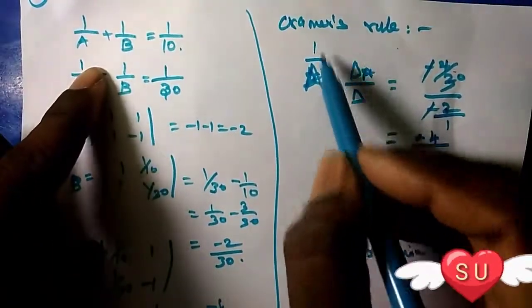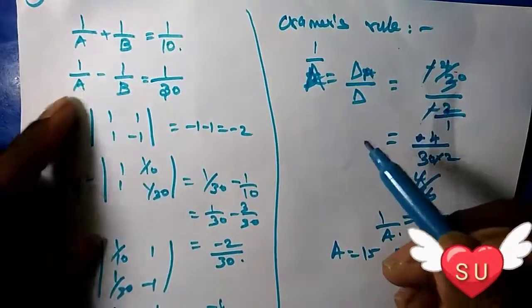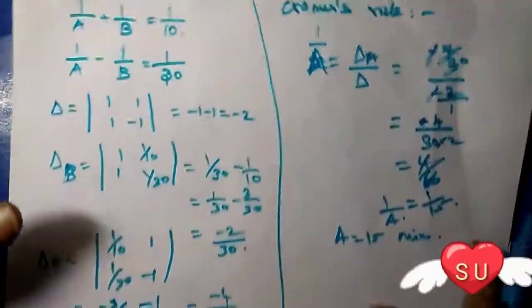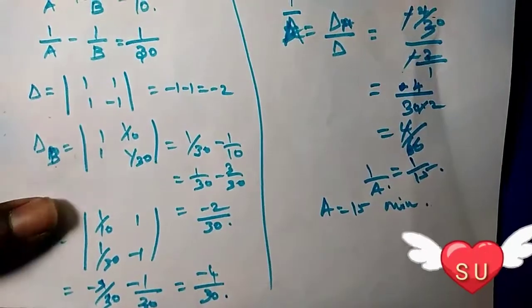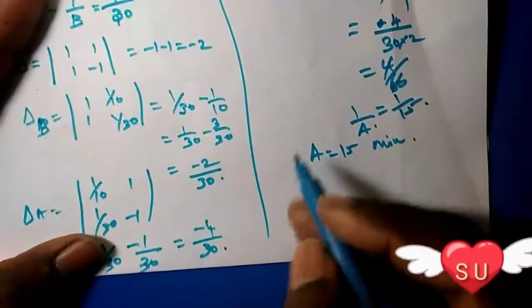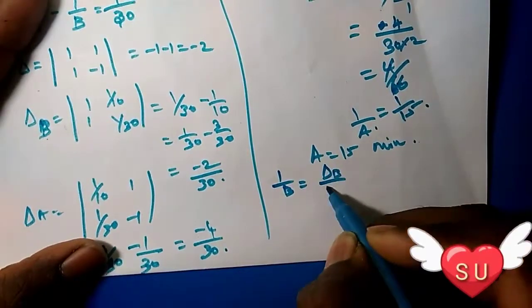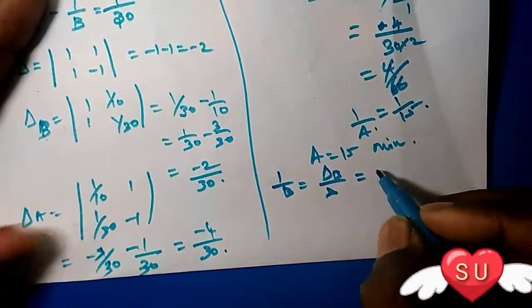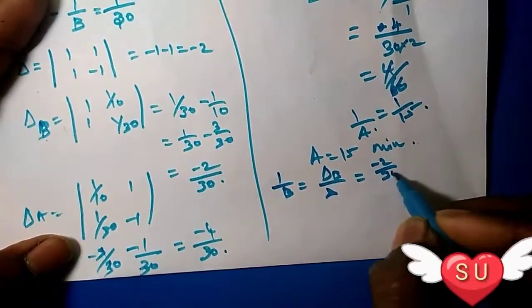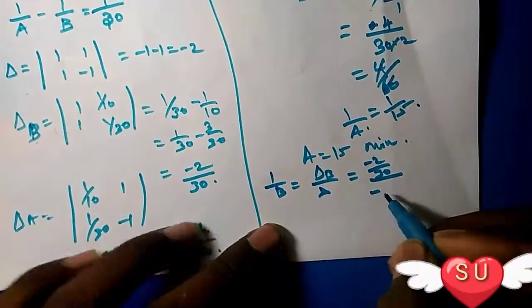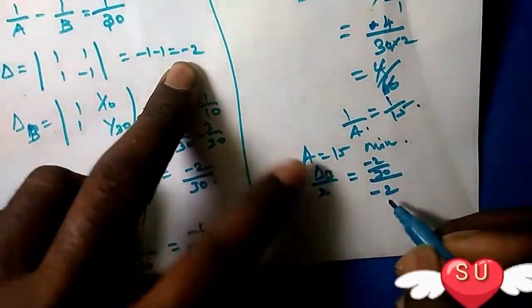Next, 1/B equals del B divided by del. Del B is -2/30 divided by -2.